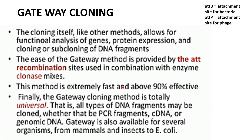Gateway cloning, like other methods, allows functional analysis of genes, protein expression, and cloning or sub-cloning of DNA fragments. The ease of the gateway method is provided by att recombination sites — att means attachment site; attB means attachment site for bacteria, attP means attachment site for phage — used in combination with the enzyme clonase mixture. This method is extremely fast, about 90% effective, and totally universal — all types of DNA fragments may be cloned, whether PCR fragment, cDNA, or genomic DNA.